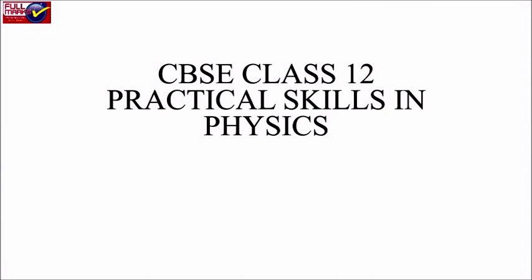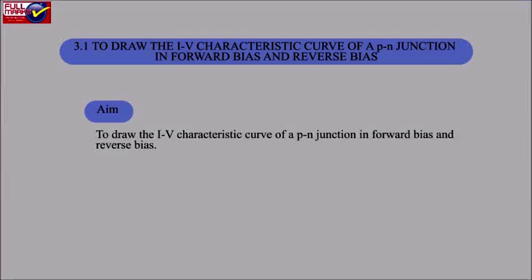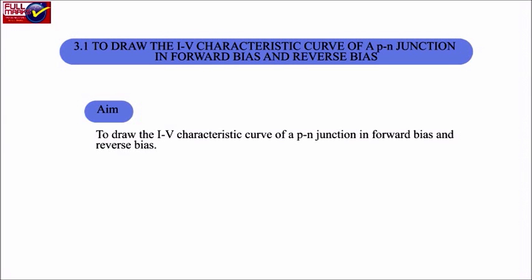CBSC Class 12 Practical Skills in Physics, Experiment No. 3: Semiconductor Devices. Experiment 3.1: To draw the IV characteristic curve of a PN junction in forward bias and reverse bias.